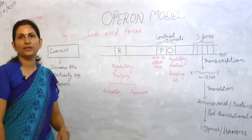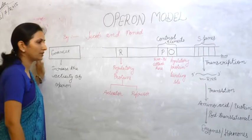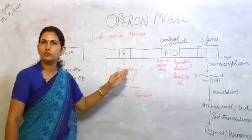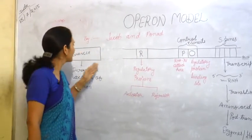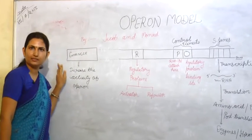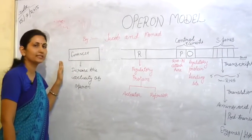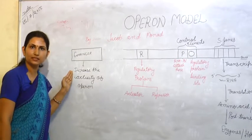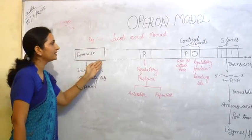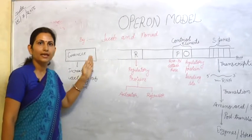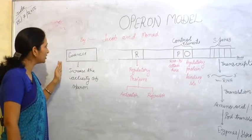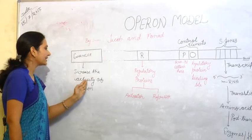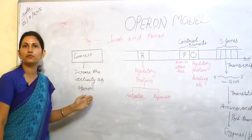I would like to explain the operon model with a diagram. The operon model has four kinds of genes. The first gene is the enhancer. It may be present anywhere in the genome, meaning it is not necessary that it always gets attached with the operon. If the enhancer is present in the genome, it increases the activity of the operon several times.